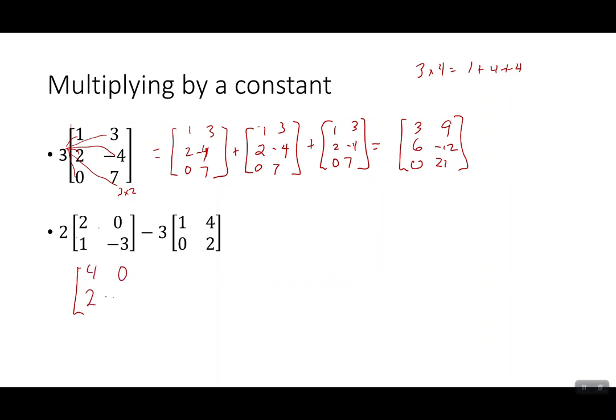So 4, 0, 2, -6. And then you can either run the negative through or you can leave it as a subtraction, however you want to do it. I'm just going to leave it as a subtraction, I guess. So 3 times 1 is 3. 3 times 4 is 12. 3 times 0 is 0. 3 times 2 is 6. And then finally do the subtraction.